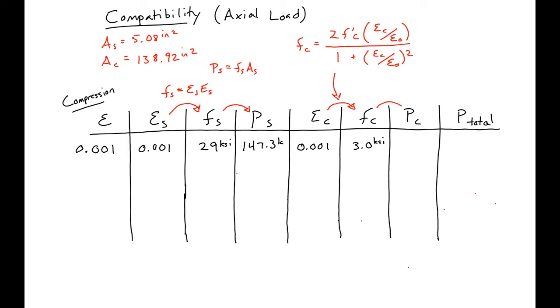Then we can go from FC to PC just by taking our FC times our concrete area, which in this case will get 416.7 kips. And then like we said before, our P total will just be our summation of our P's, or in this case just our concrete plus our steel, which will be 564 kips.